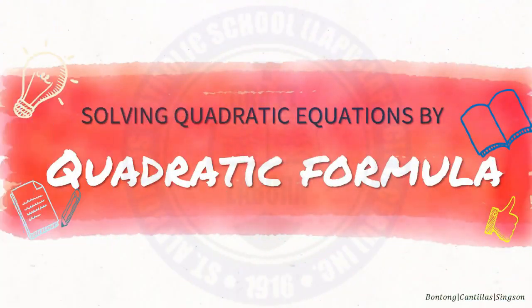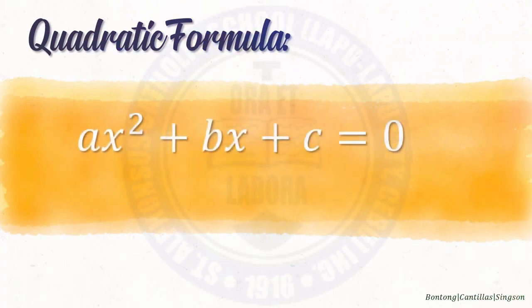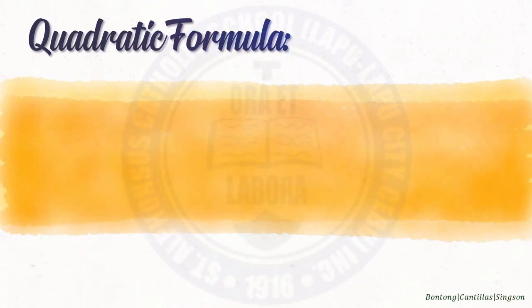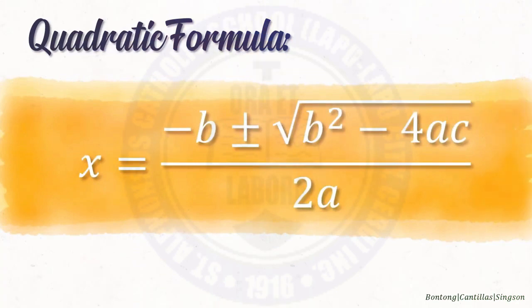The last method of solving quadratic equations that we will be dealing with is the quadratic formula. This formula was derived from the standard form of the quadratic equation, which is ax squared plus bx plus c equals 0. We used the previous method of completing the square to derive the quadratic formula: x equals negative b plus or minus square root of b squared minus 4ac, all over 2a.